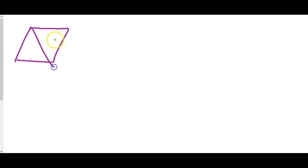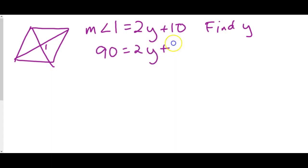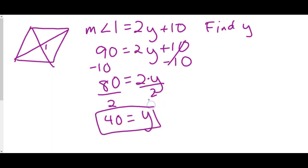One more rhombus example: the measure of angle 1 is 2y plus 10, and we want to find y. When the diagonals of a rhombus meet, they meet at a 90-degree angle, so we know angle 1 equals 90. We set 2y plus 10 equal to 90 and solve: subtract 10 from both sides, then divide by 2, giving us y equals 40.